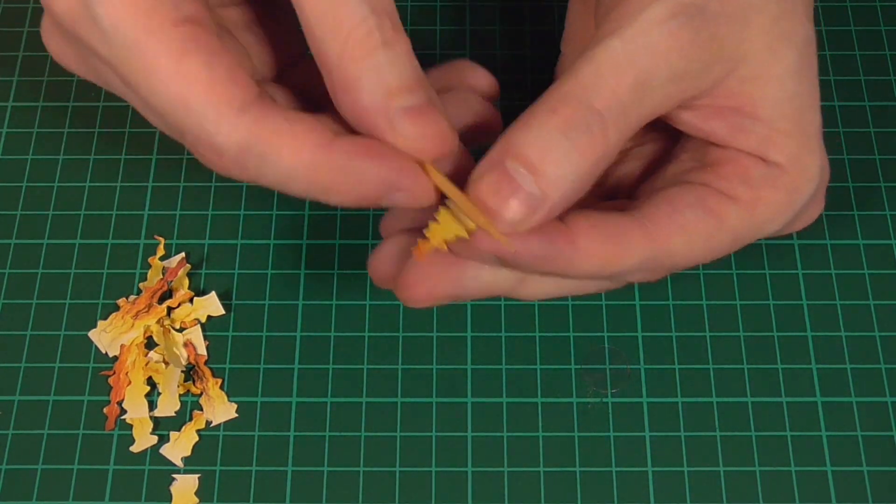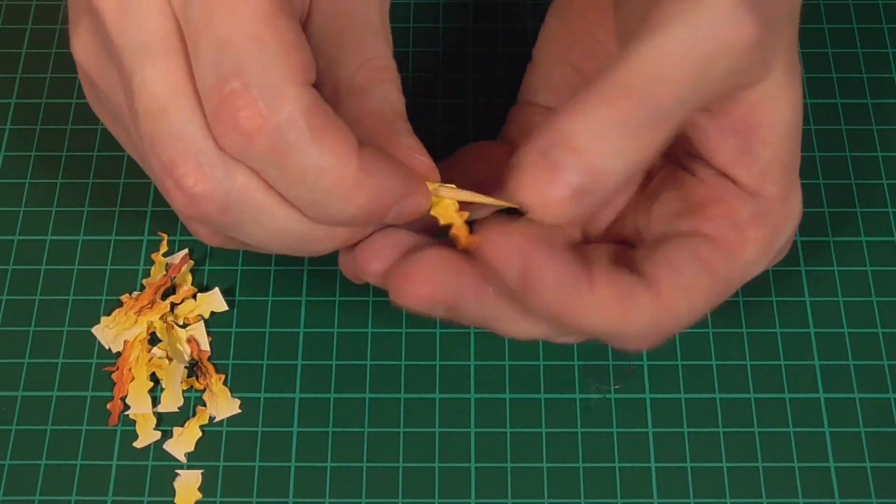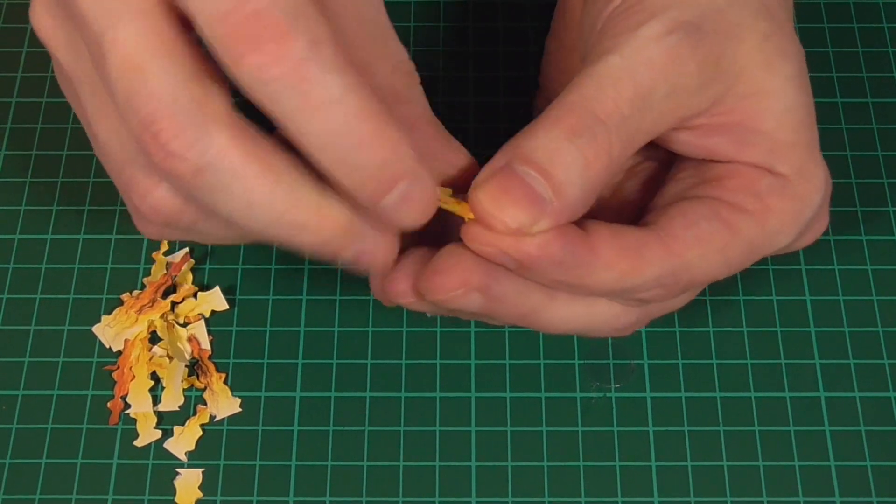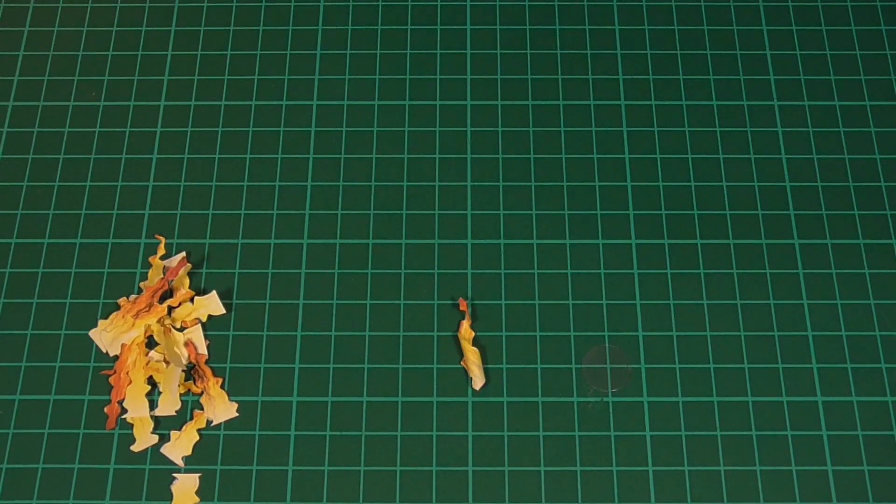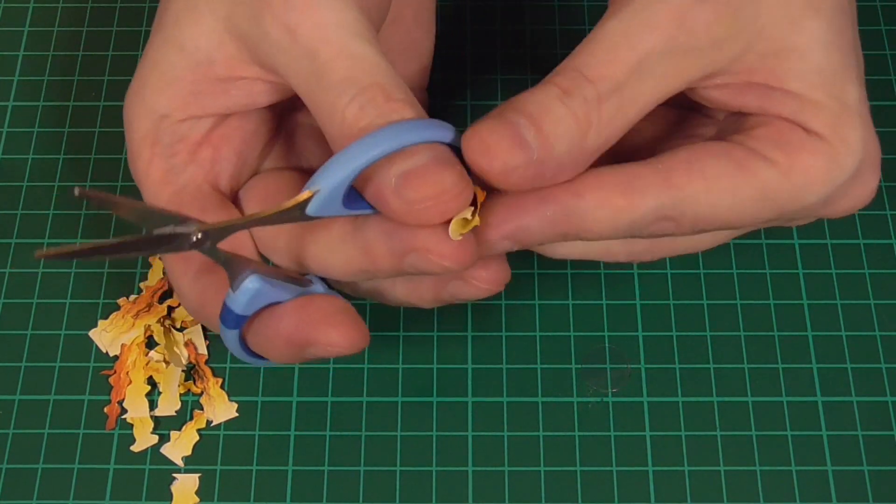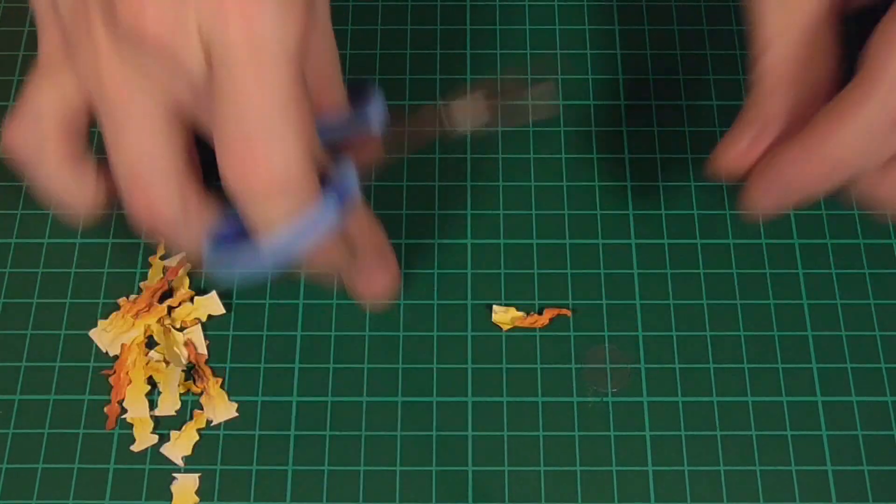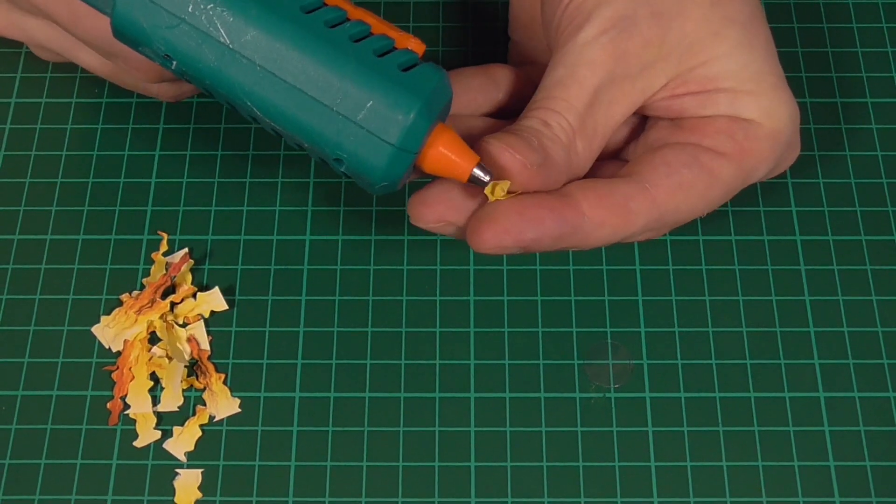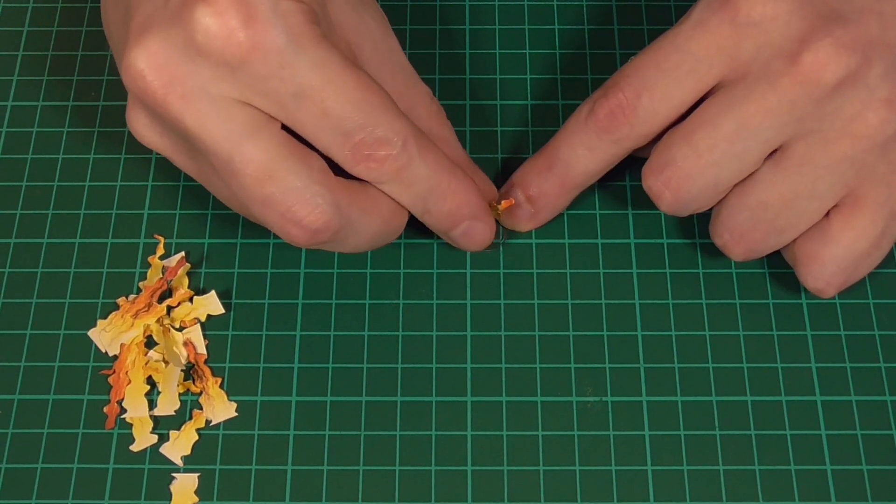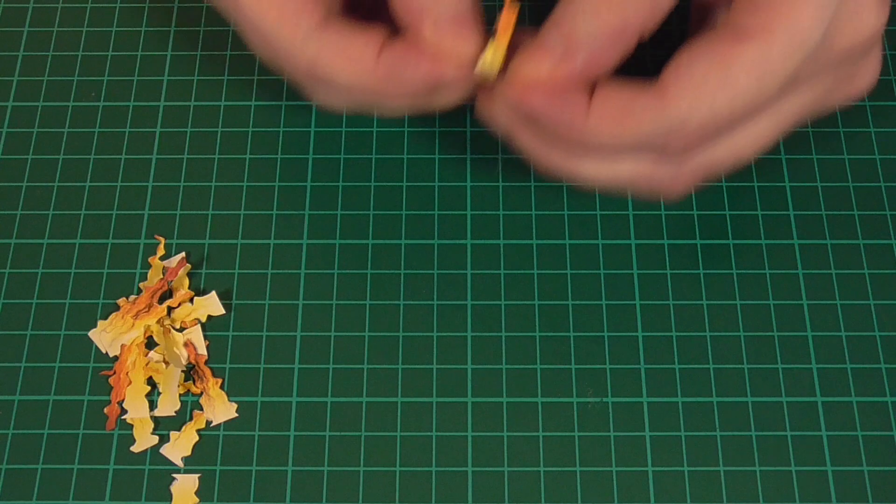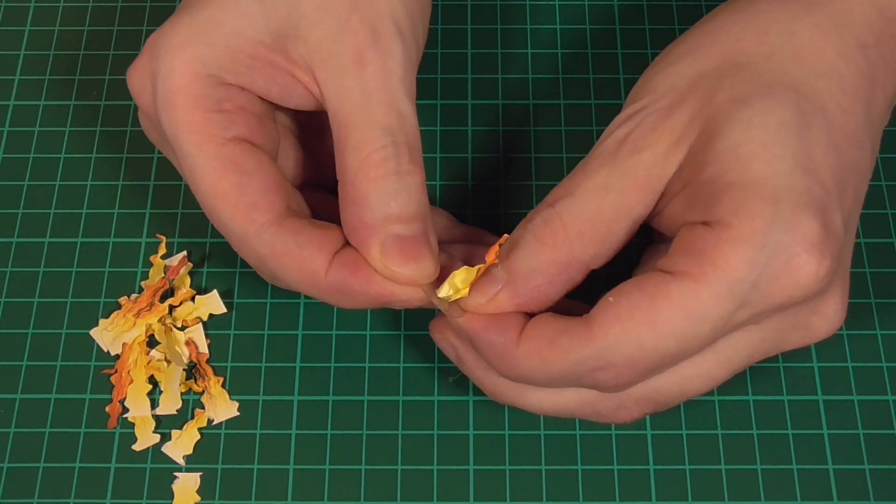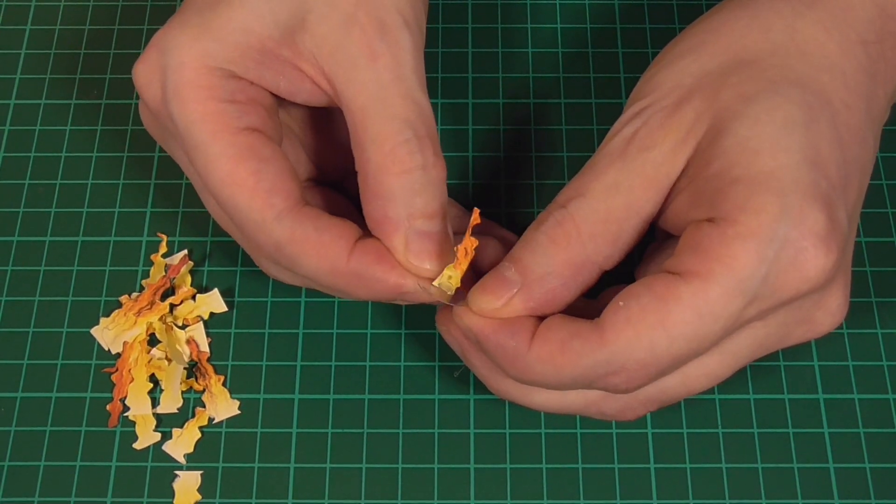For the assembly, we're going to start by twisting one of the flames around the barbecue skewer so that it ends up looking something like that. Then we'll need to cut the bottom edge nice and straight, and then it's just a fairly simple matter of gluing that straight edge to the base using a spot of hot glue, which should result in this kind of thing.